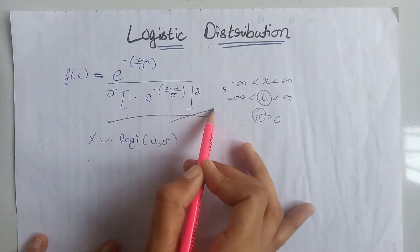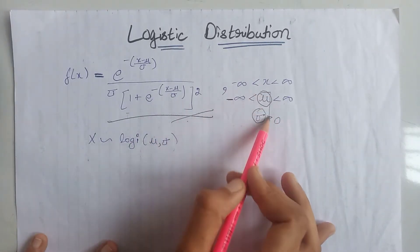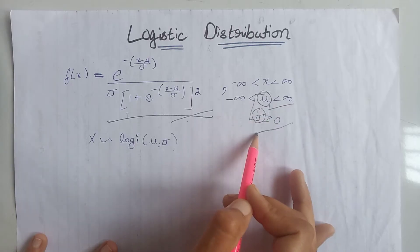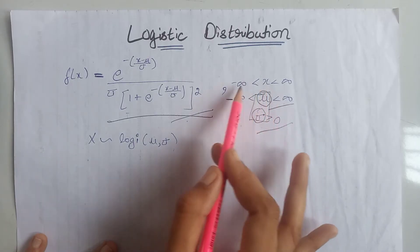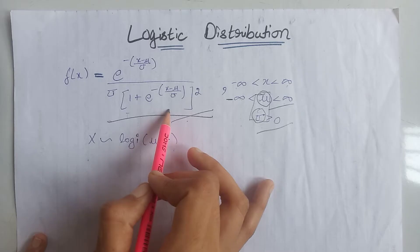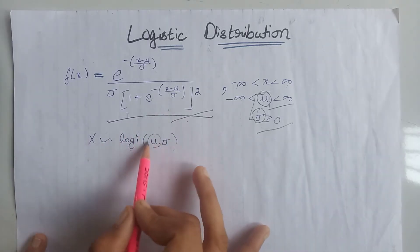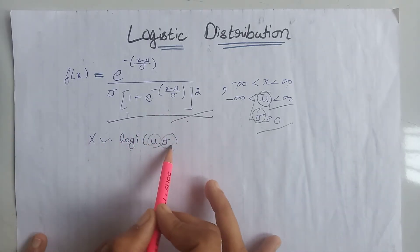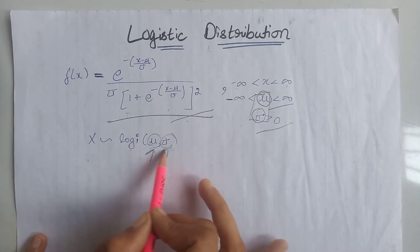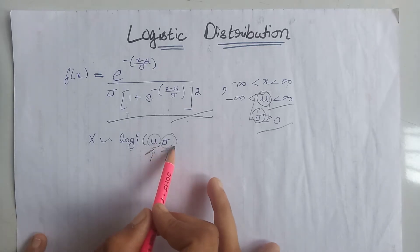This is the PDF of the logistic distribution with two parameters, having limits where x lies between minus infinity to infinity. Now, x as a random variable belongs to the logistic distribution with these two parameters. Remember that these are just parameters, not the mean and variance of the logistic distribution.